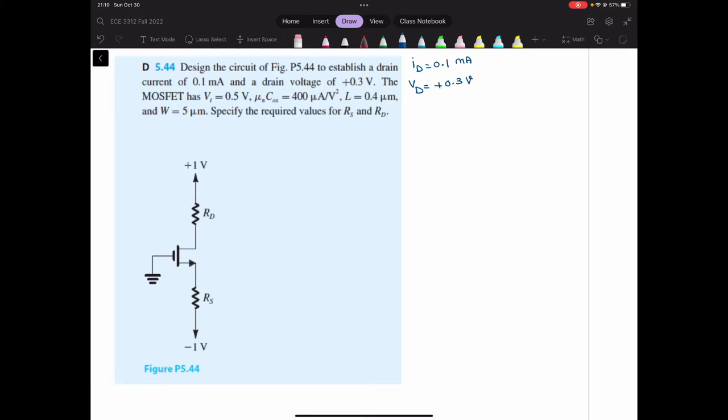The MOSFET has VT equal to 0.5, mu and C oxide is 400 micro, L and W is given. So we want to find the values for RS and RD because the unknowns are RS and RD.